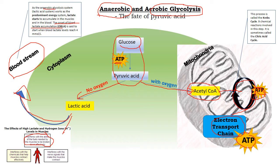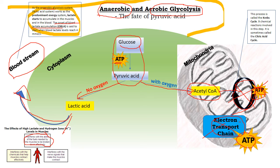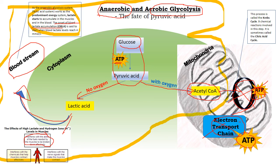The Krebs cycle and the electron transport chain you don't necessarily need to know too much about, but you definitely need to know about the onset of blood lactate accumulation and all the related content. It's important you understand that the aerobic pathway plays a role as well, but it's not necessarily a huge focus in the exam — the OBLA content is.